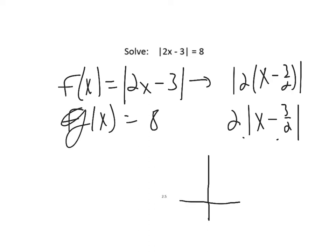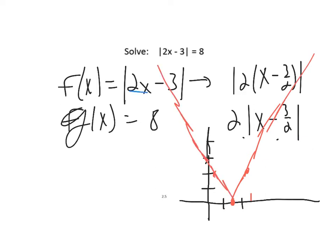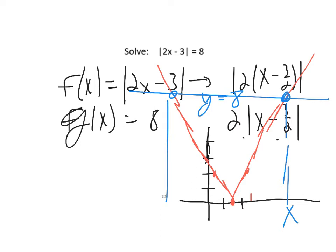This isn't what you're going to do to solve it — I'm doing this to give you a picture. It's been shifted right 1.5, and instead of going over 1, up 1, it goes over 1, up 2. So the graph looks like this, and I want to know where it crosses the line y = 8. I can see there's going to be a positive answer and a negative answer across the y-axis, so there are going to be two answers.